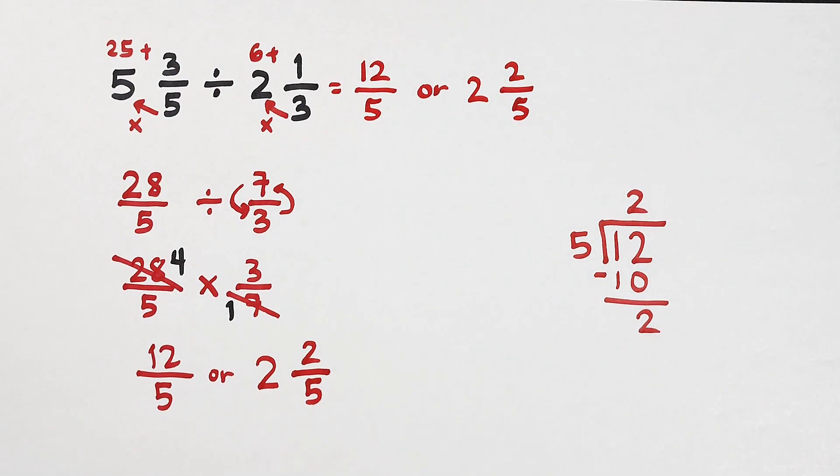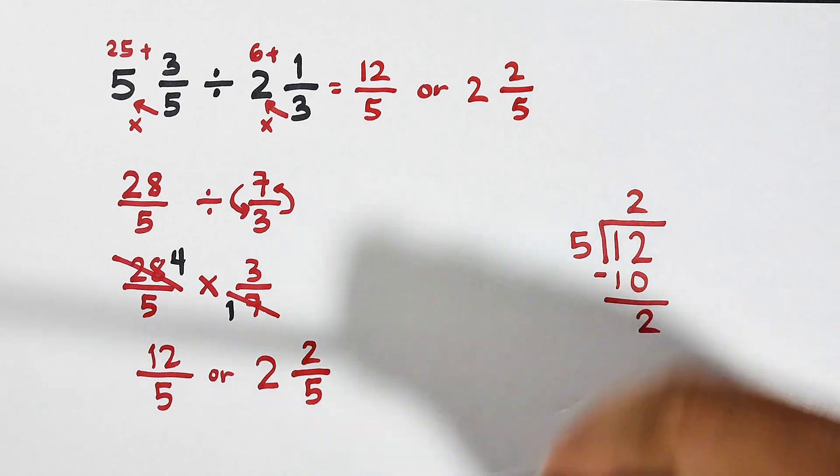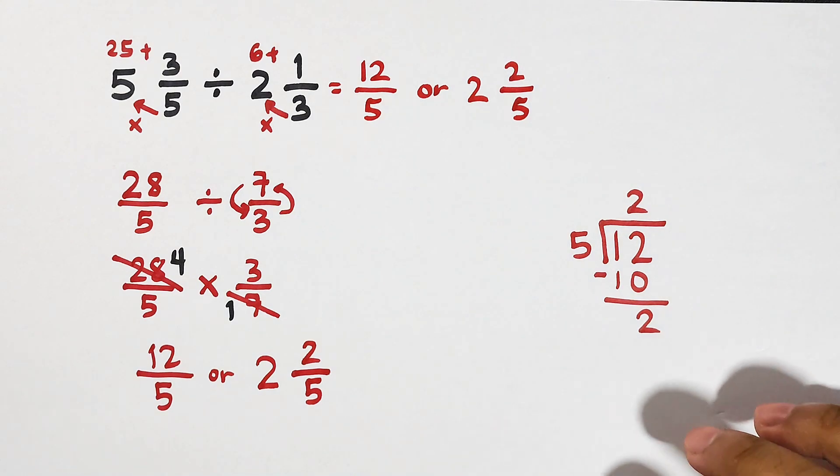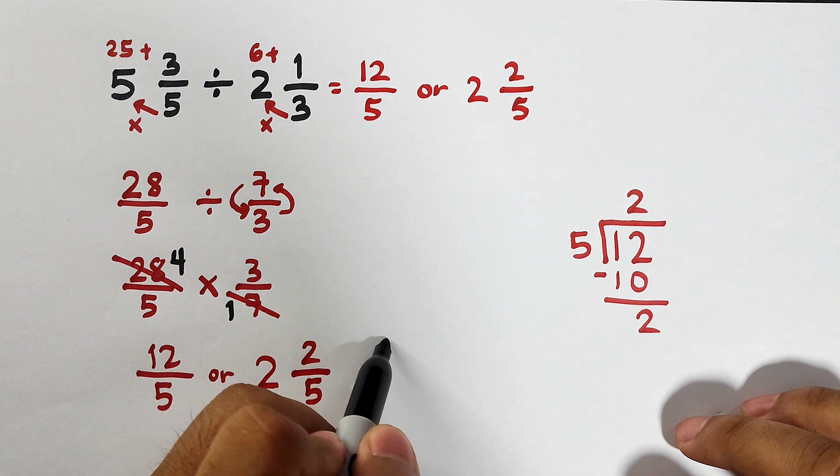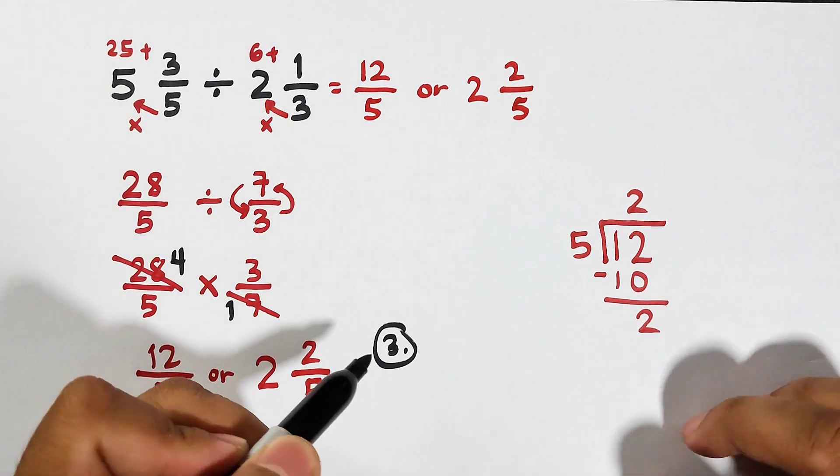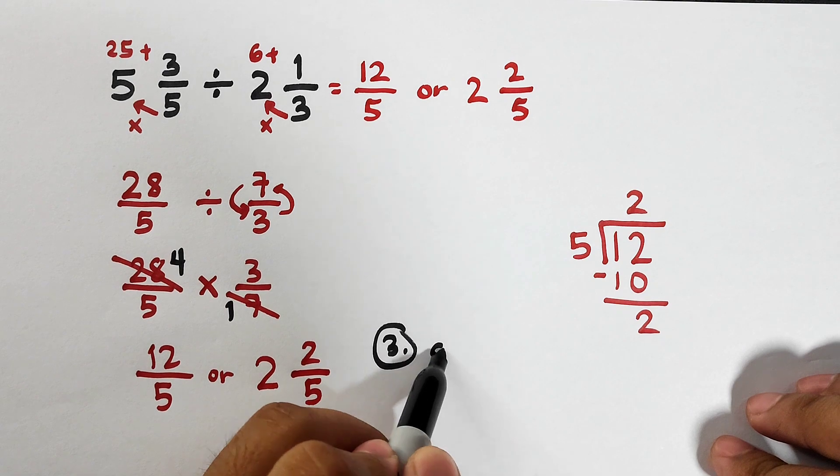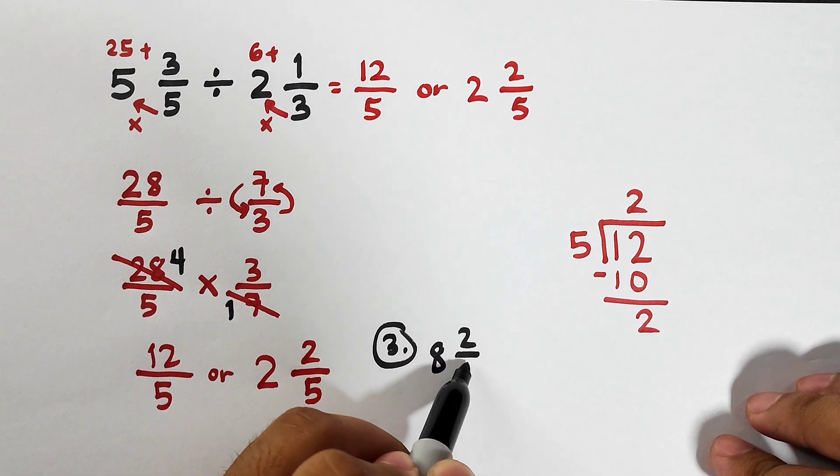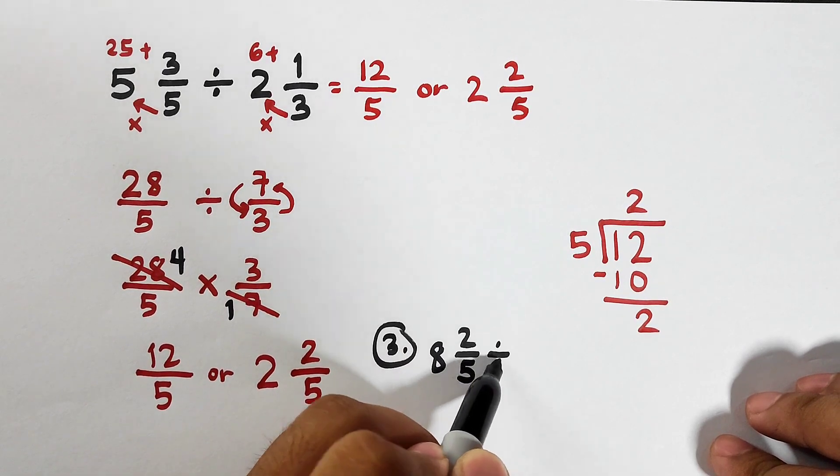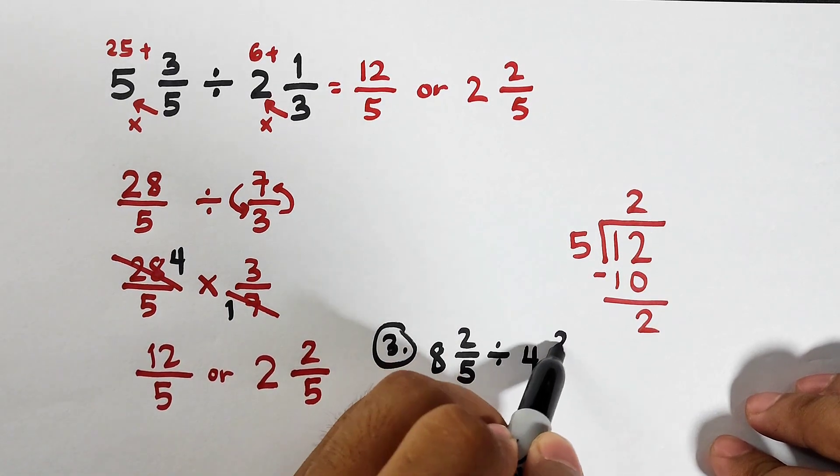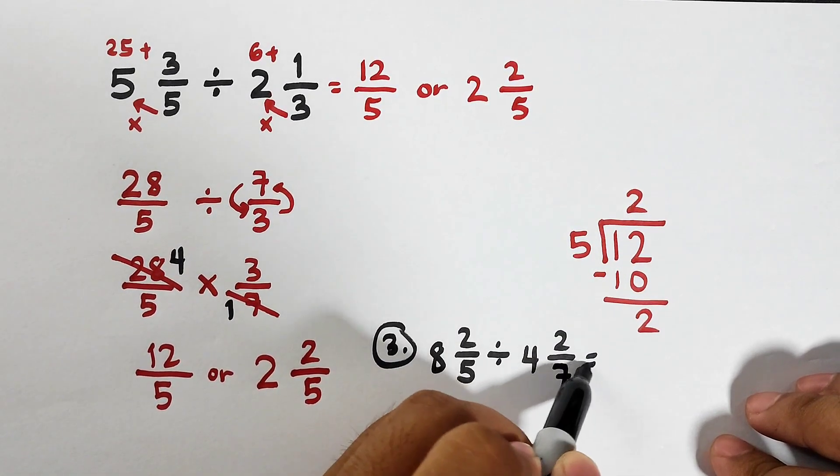Now as part of our routine, I will give you a problem wherein you will divide these mixed numbers. This will be item number 3, and I hope that you put in our comment section what is your answer: 8 and 2/5 divided by 4 and 2/7.